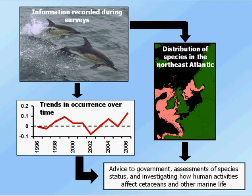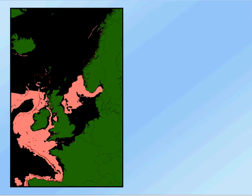This schematic gives an overview of things. We take the data recorded during surveys and use it to look at things like trends over time in specific areas, or the distribution of species over much larger areas and how that changes over time. We use this information to provide advice to government, assessment of species status, and for investigating how human activities affect cetaceans and other marine life. I'm going to talk about three uses of Marine Life data today, coming from three different projects I've been involved in.